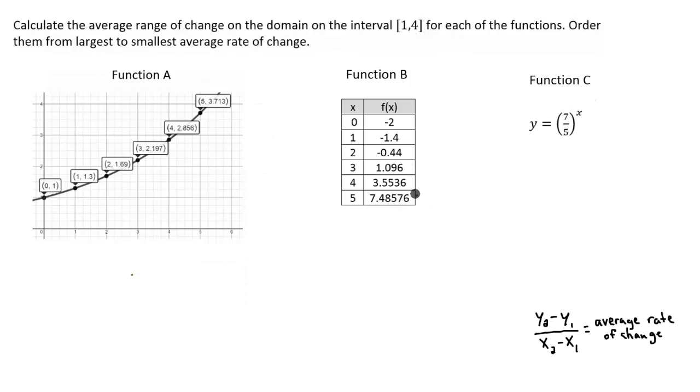And to calculate the average rate of change, we're going to bring in the slope formula, when we have y2 minus y1 divided by x2 minus x1, or you could think of this as the change in y divided by the change in x.